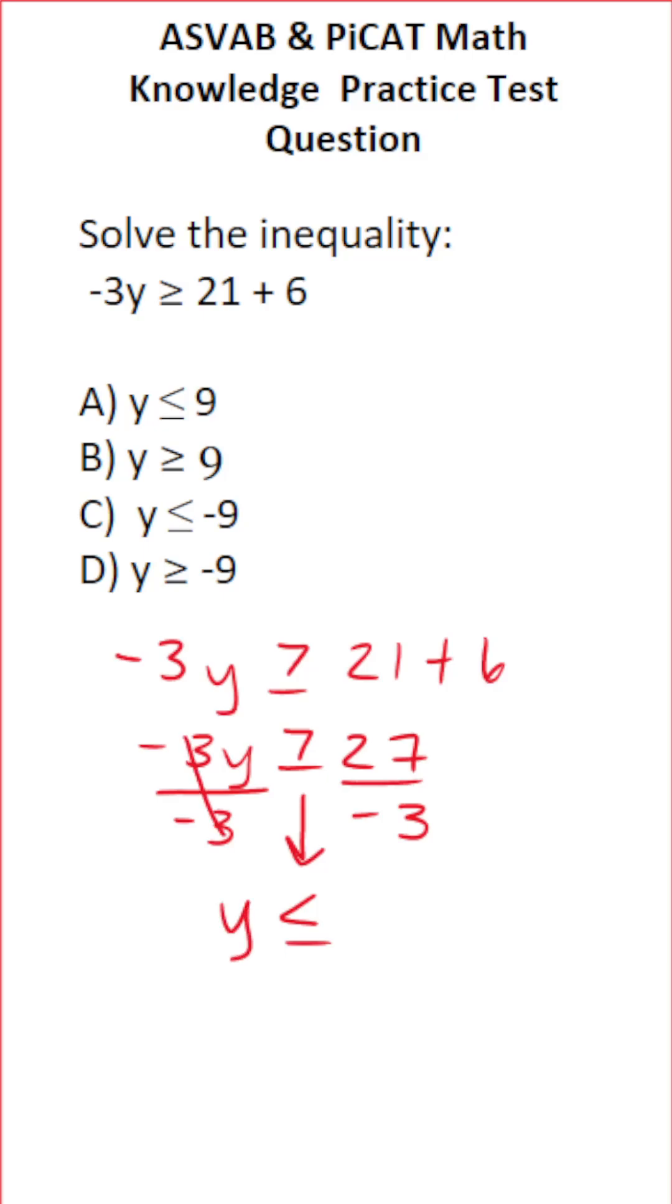This crosses out, leaving you with y on this side. 27 divided by negative 3. A positive divided by a negative is going to be a negative. 27 divided by 3 is 9.